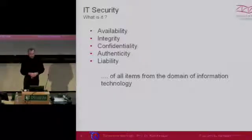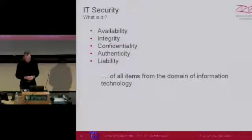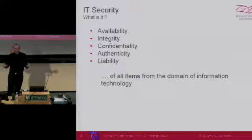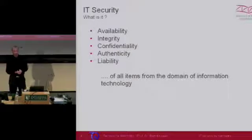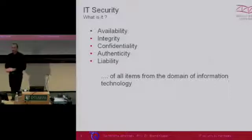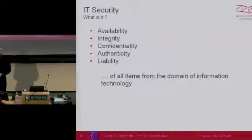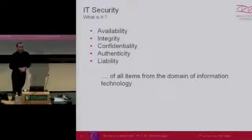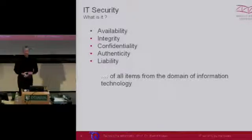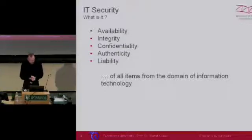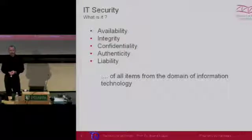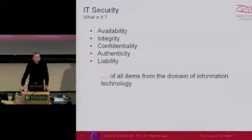Another issue is confidentiality and authenticity. If you receive a message from anyone, you want the author who signed that message to really be the author. And liability — for example, if you buy something on eBay, you want the person to send you what you bought, and the other person wants you to pay for the goods. You want confidentiality so that only those persons authorized can see your data. You want all these features for all items in the domain of information technology.